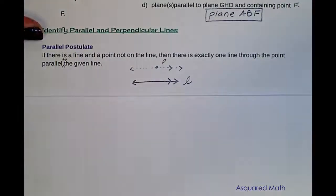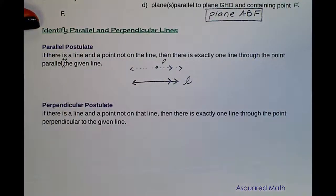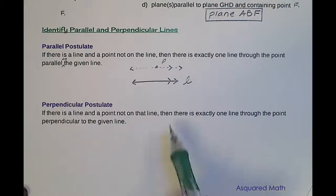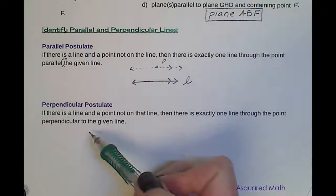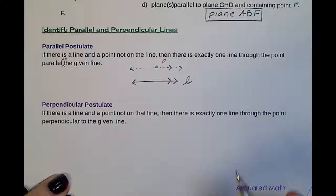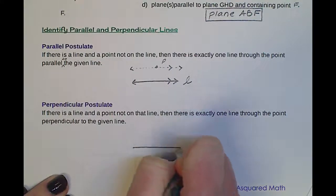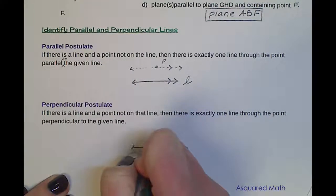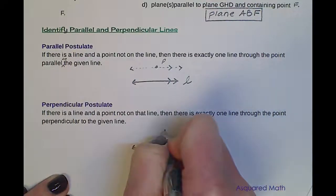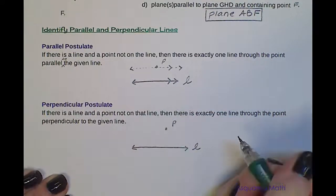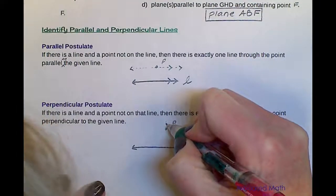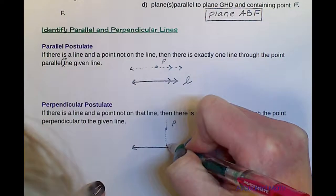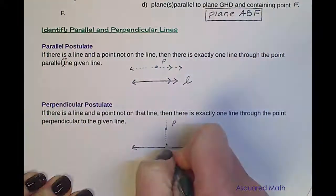The perpendicular postulate says: if there is a line and a point not on the line, then there is exactly one line through the point perpendicular to the given line. So again, we have some line L and some point P off in space, and there is just one particular line that can go through P and intersect line L at a 90-degree angle.